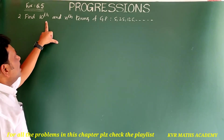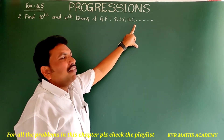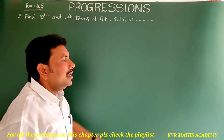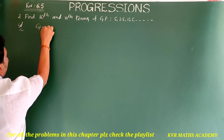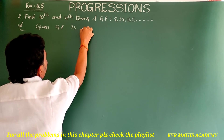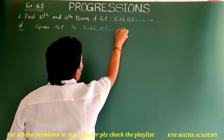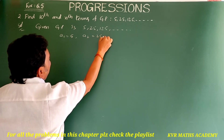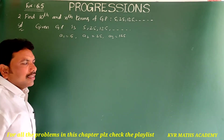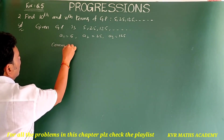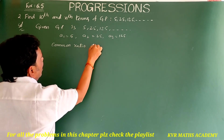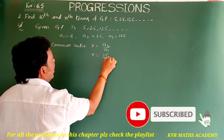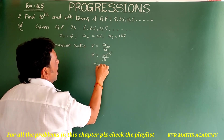Next, the second question: find the 10th and nth terms of the GP 5, 25, 125, and so on. The given GP is 5, 25, 125. Here a1 = 5, a2 = 25, a3 = 125. Let us find the common ratio: r = a2/a1 = 25/5 = 5. So common ratio r = 5.